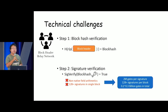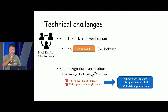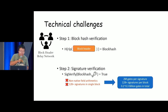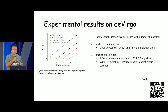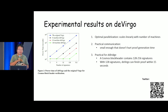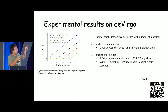To give some numbers: our signature scheme has two million gates per signature, and in a proof-of-stake block there are usually 128 or more different signatures, so in total there will be 0.2 to 0.3 billion gates — that's a massive scale circuit. Fortunately, we propose deVirgo, which is totally capable of handling this massive scale circuit because we have optimal parallelization. This means the proving speed scales linearly with the number of machines — if you double the number of machines, the proving speed doubles.